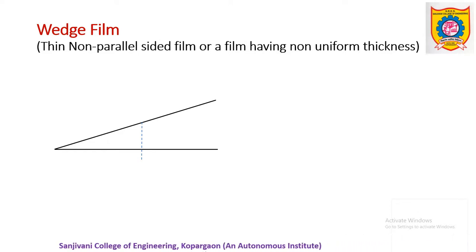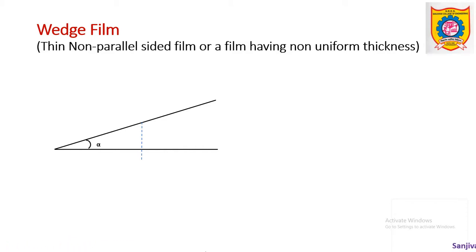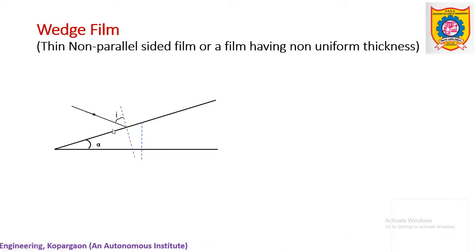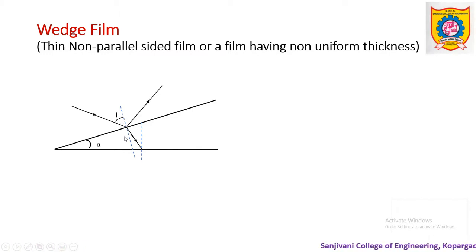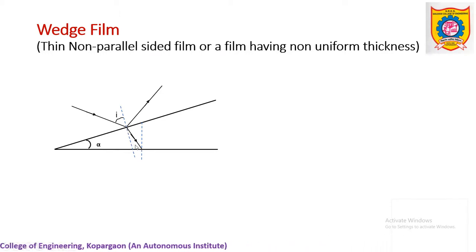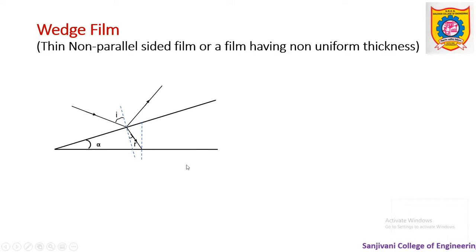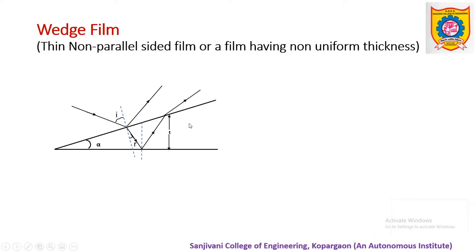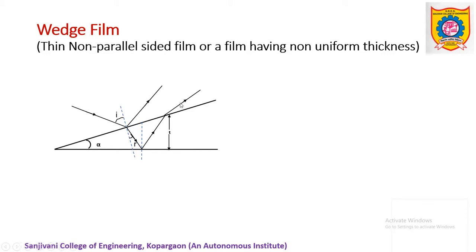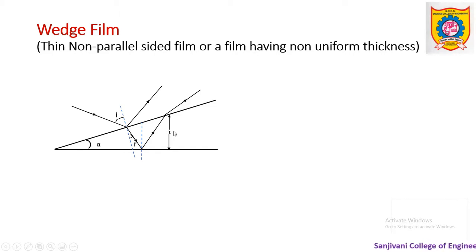Let us consider this wedge-shaped film and let alpha be the wedge angle. For this wedge film, our interest is to find out the conditions of constructive and destructive interference. Consider this as the incident ray, which makes the wedge angle i with respect to the normal. From this point it will be partly reflected and partly refracted. This refracted light passes through the film at the angle of refraction, is reflected at the bottom surface, and then passes back through into the air, bending slightly away from the normal. Here at this point we assume t as the thickness of the film.